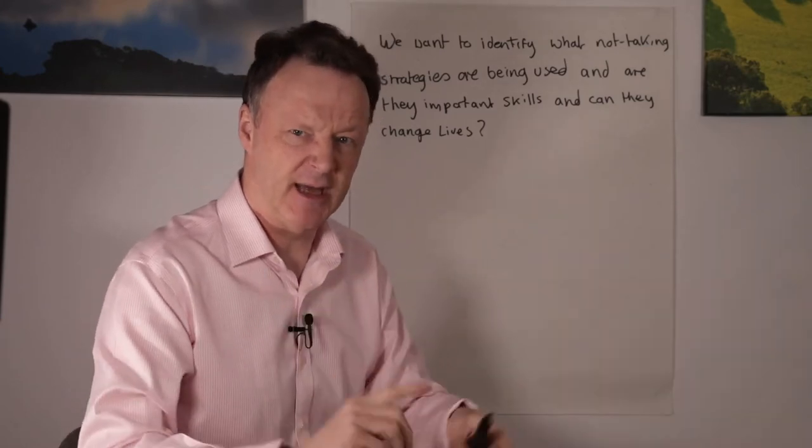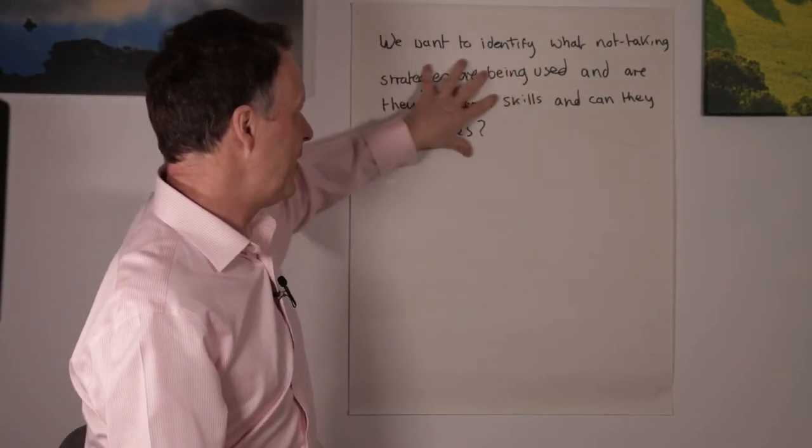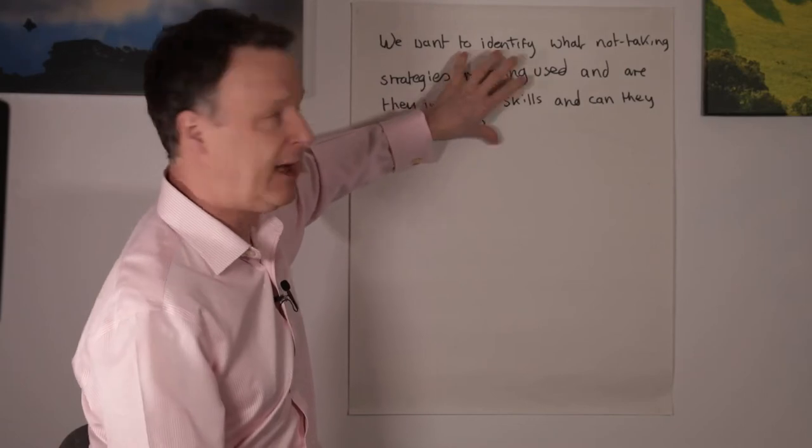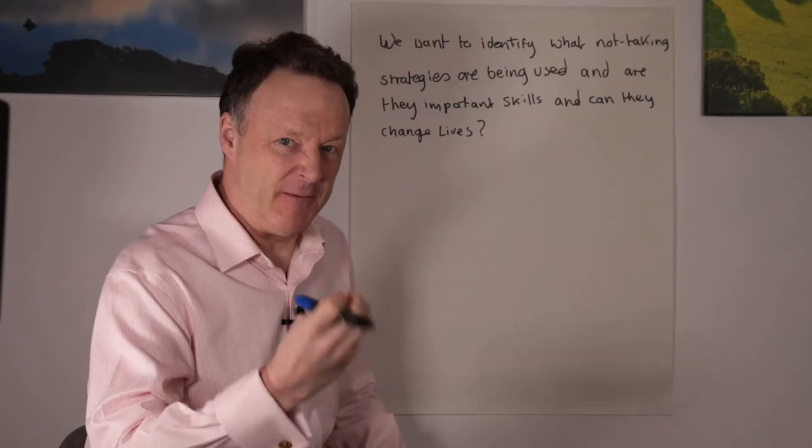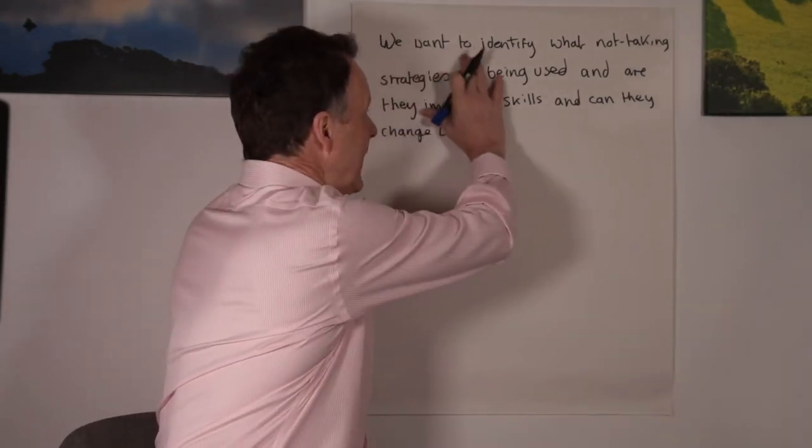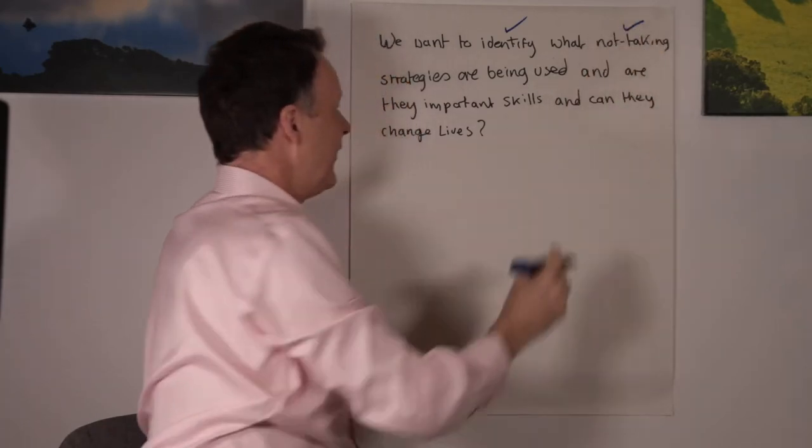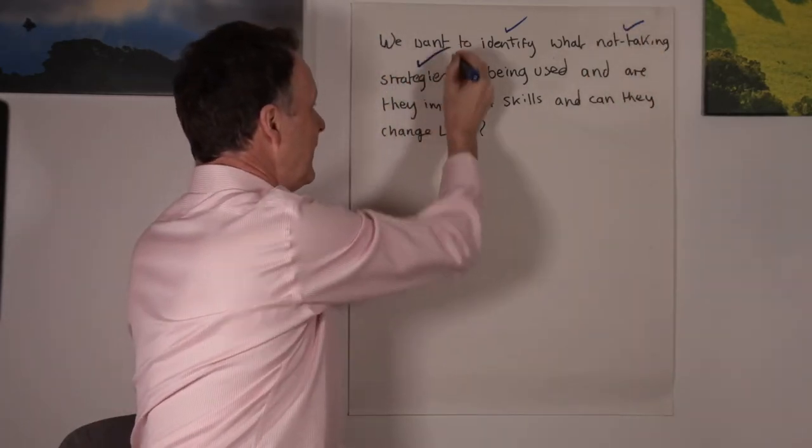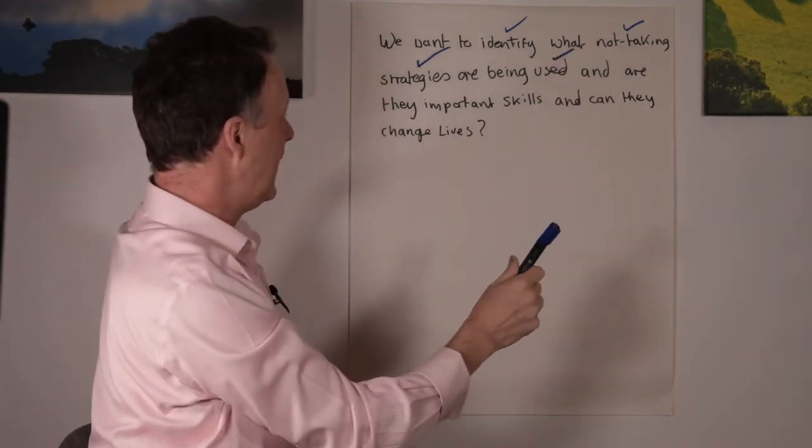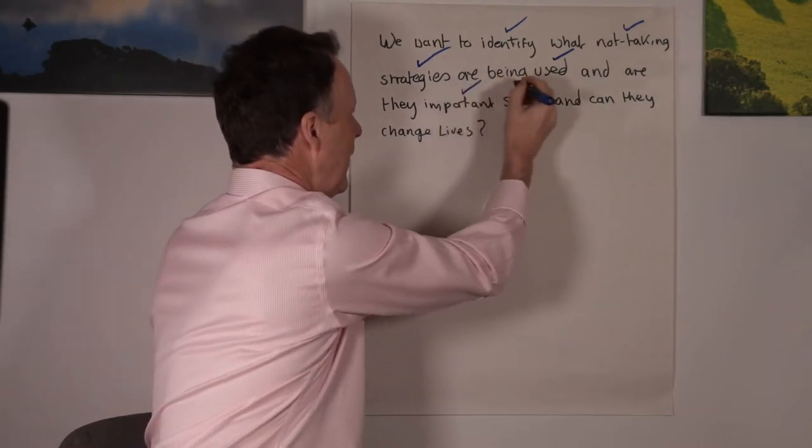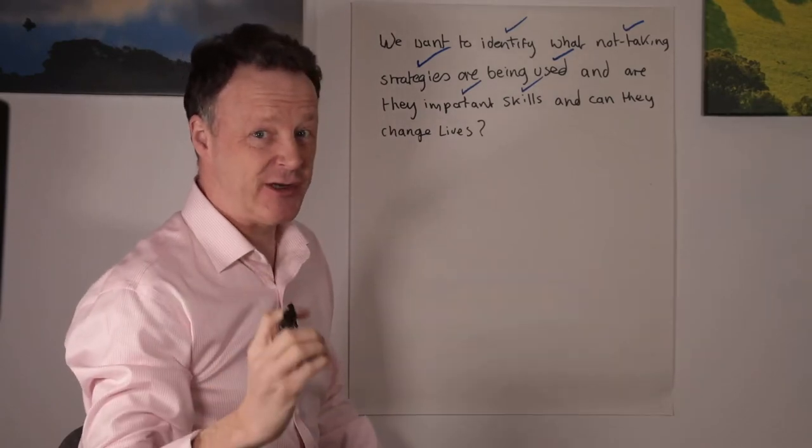With traditional note-taking, I'd either write down something like this or I would summarize it. But the strategy I use now is the deep filter. So I would take out what I believe is the important information. So here, 'identify,' 'note-taking,' and again 'strategies' is important because that's what it's all about. I take out the word 'used.' I don't need any of this. The key is: are these strategies, important skills, and can they actually change lives?